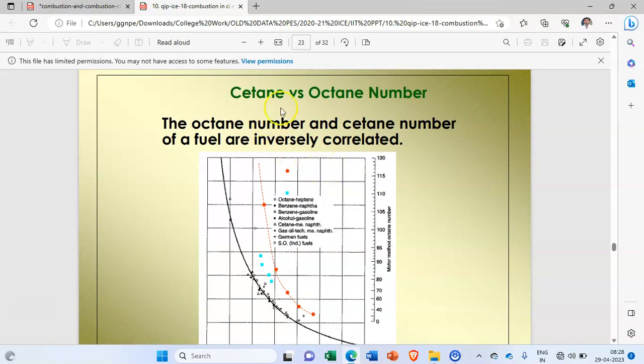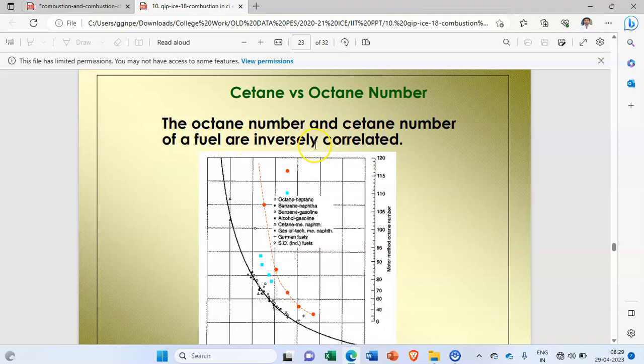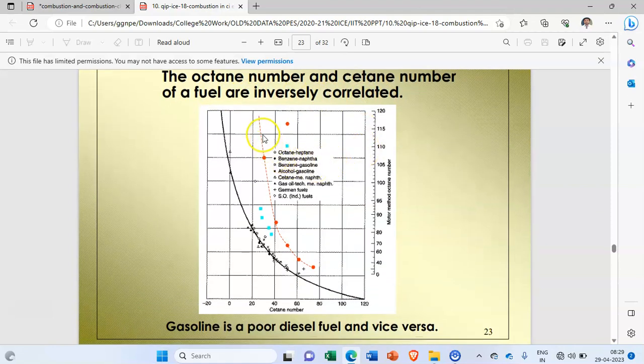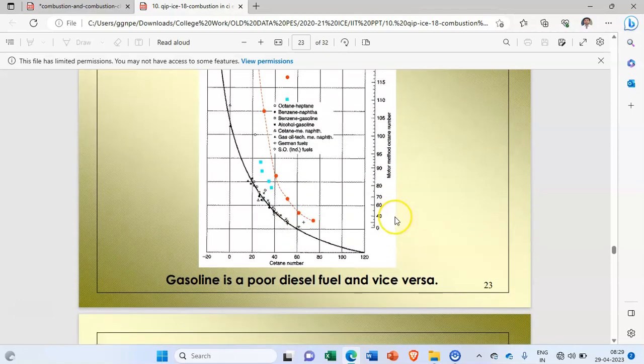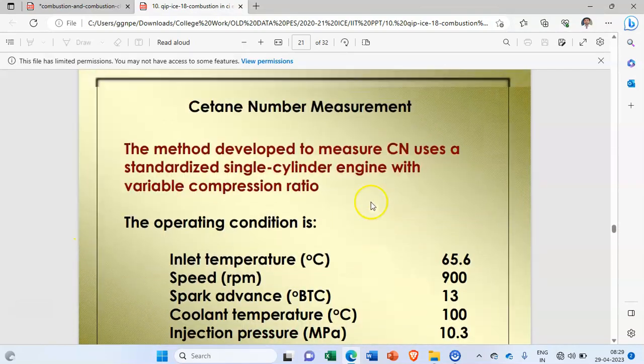This is the graph for cetane number versus octane number. The octane number and cetane number of the fuel are inversely correlated. If you see this particular plot, these are the octane numbers and these are the cetane number lines. On the x-axis there is cetane number, and there is a motor method to calculate the octane number.